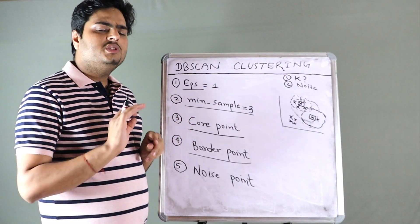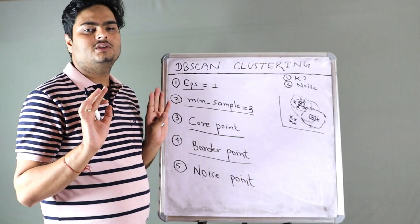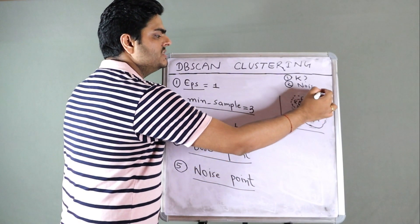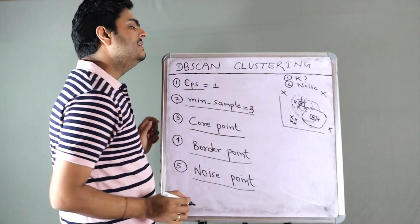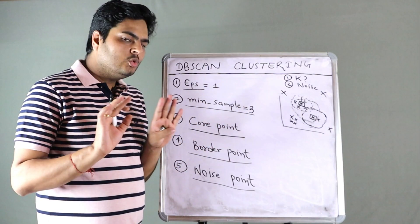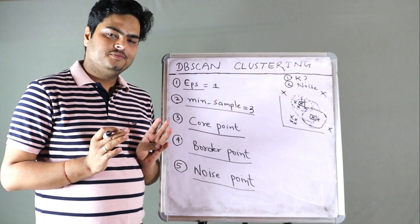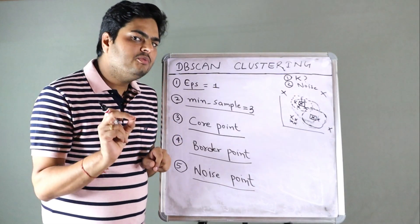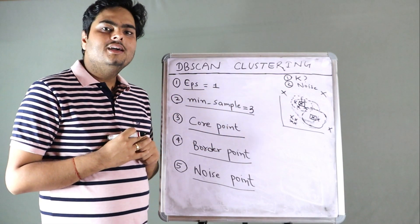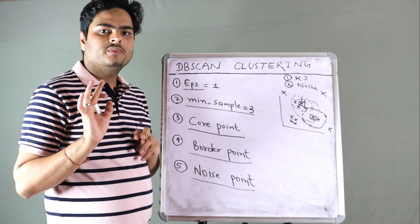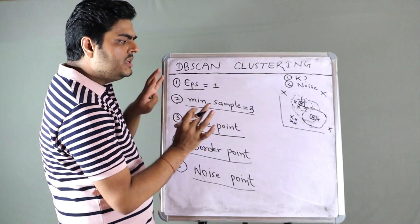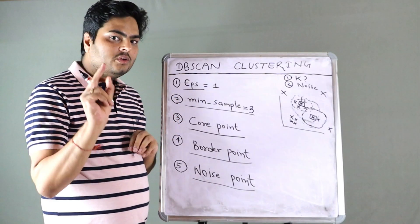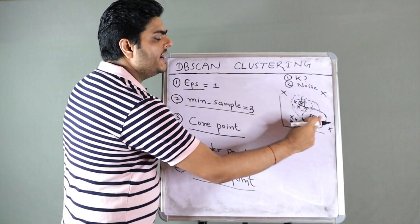All points which are neither core nor border are noise points. Noise points will always be far away — for example, isolated points where the density around them is low. If a point is not a core point, it could still be a border point if it has a core point nearby. If that also does not happen, then it is a noise point. We are essentially trying to find where the high density of points is.